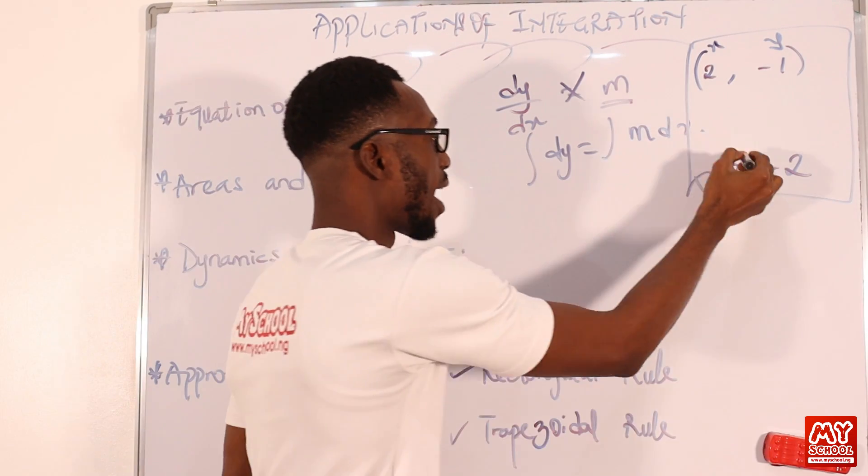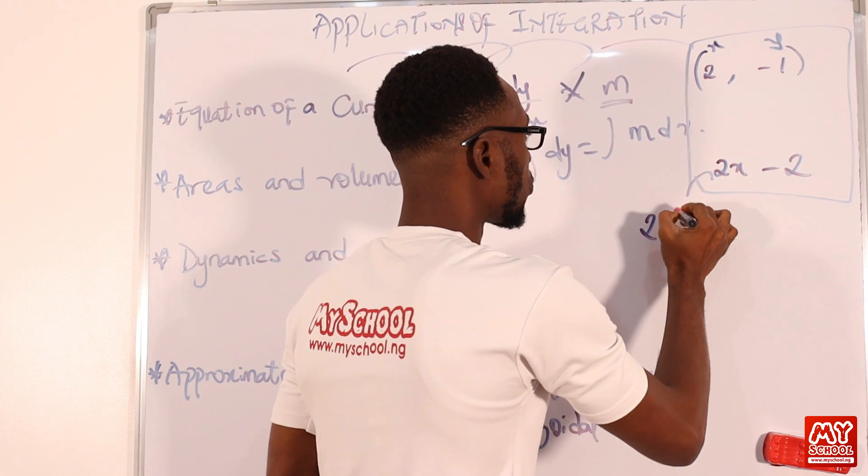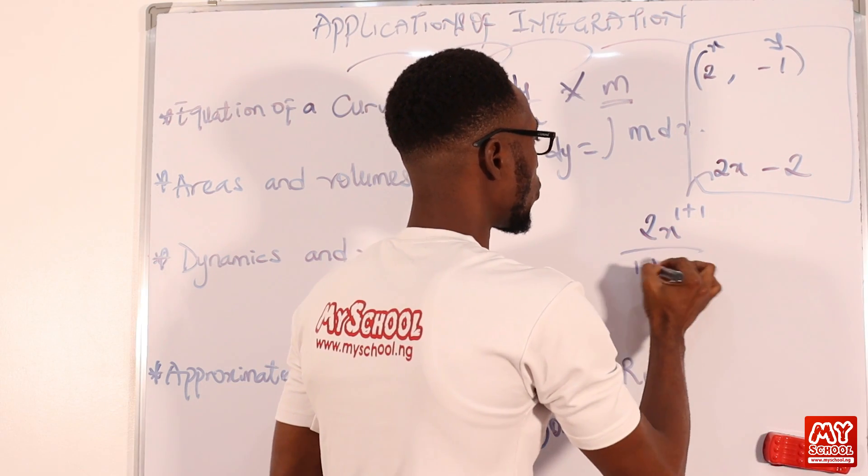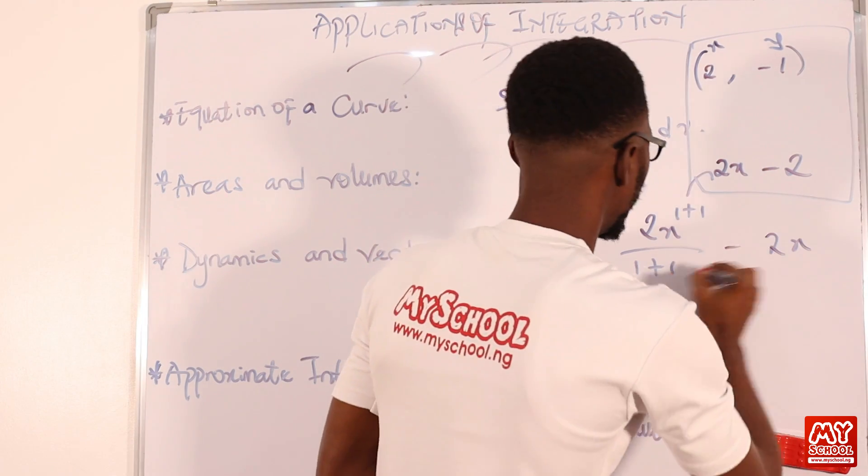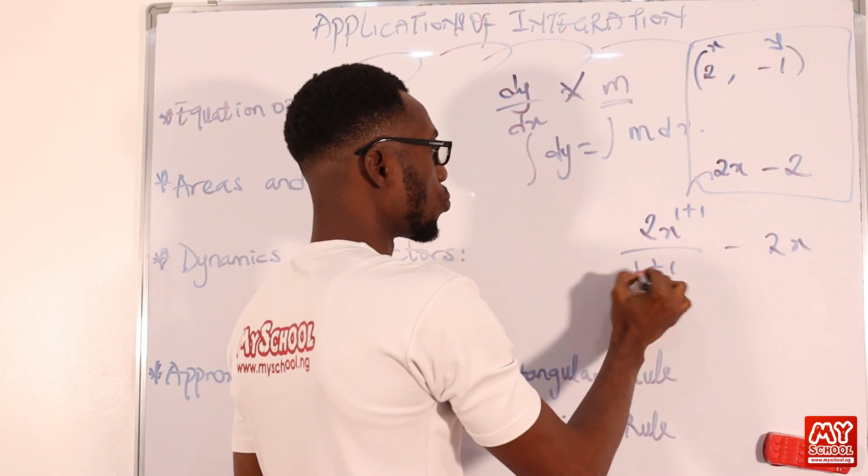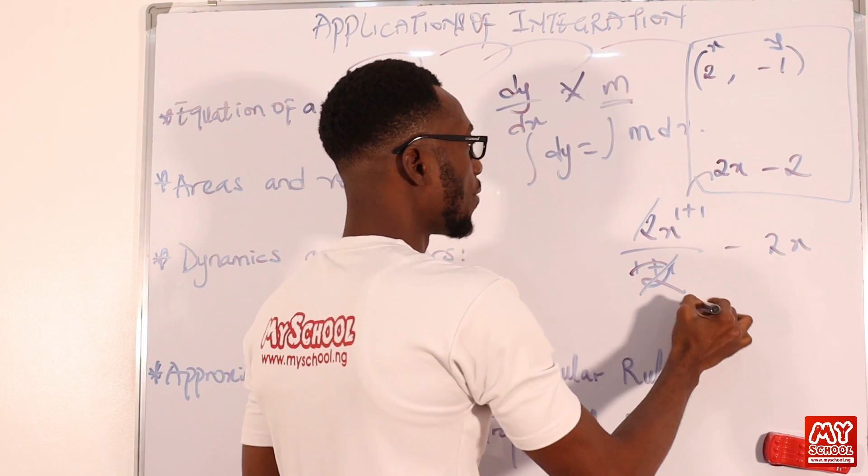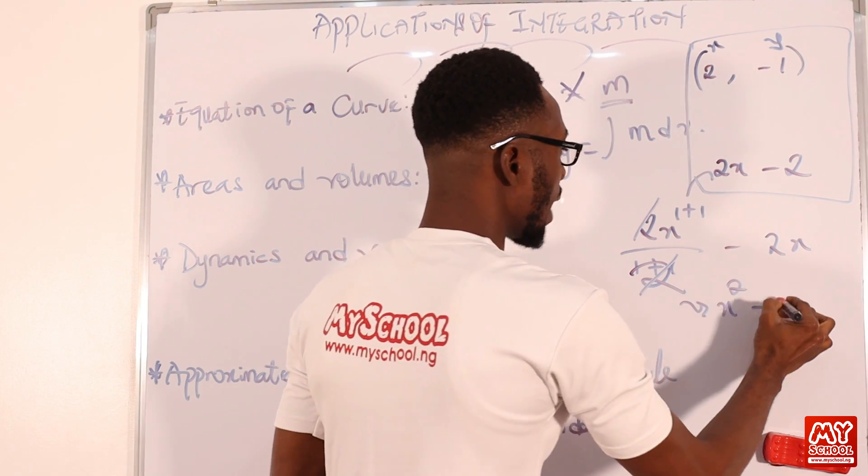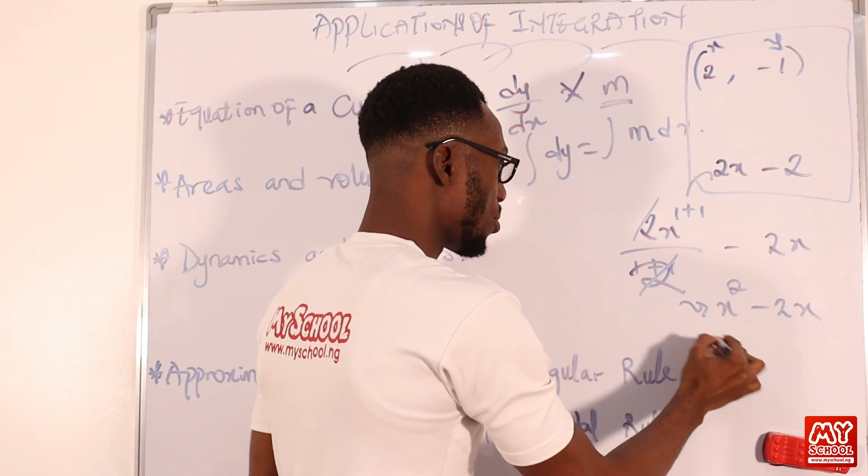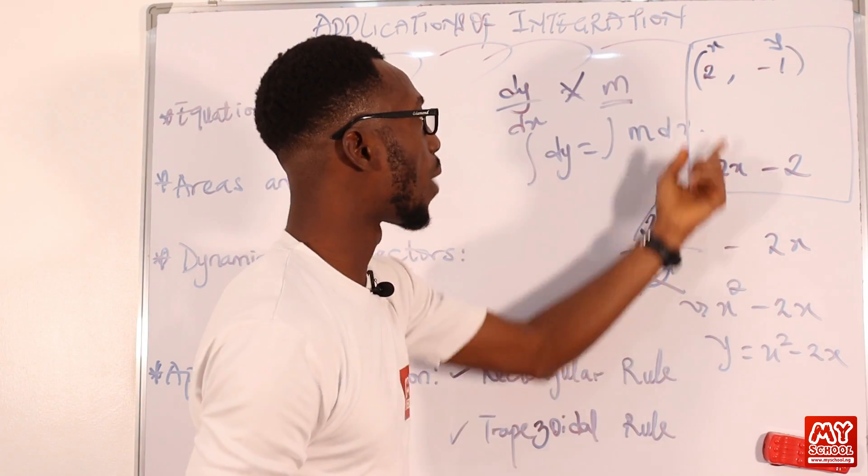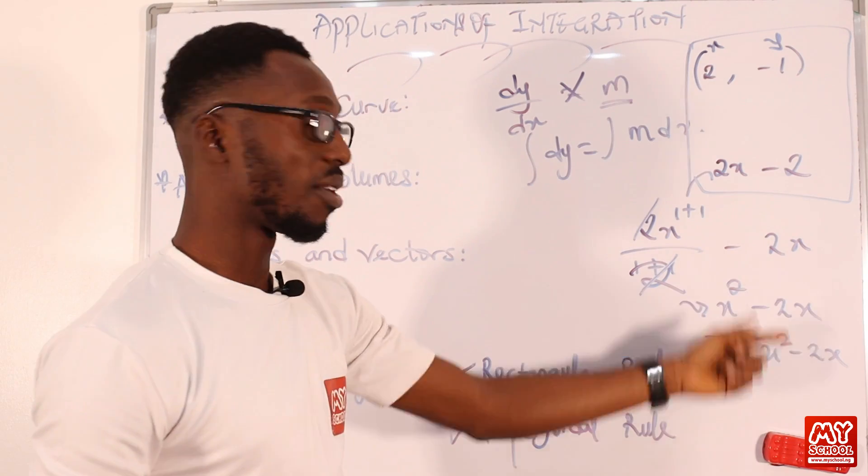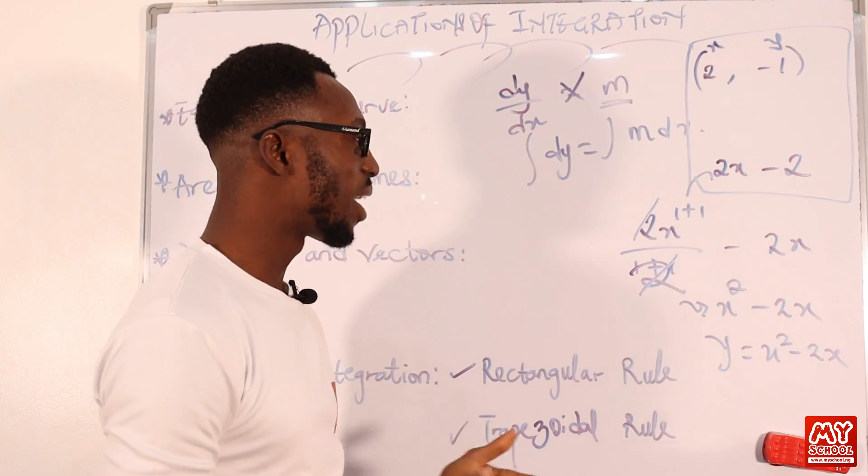So what you are required to do is integrate this. So if I integrate this, I'm going to have 2x to the 1 plus 1 over 1 plus 1. If you integrate a constant, you will have this. So 1 plus 1 is 2, 2 cancels 2. At the end of the day, I'm going to have x squared minus 2x. So we have y equals to x squared minus 2x. I put y here, then x here. So we can see that.